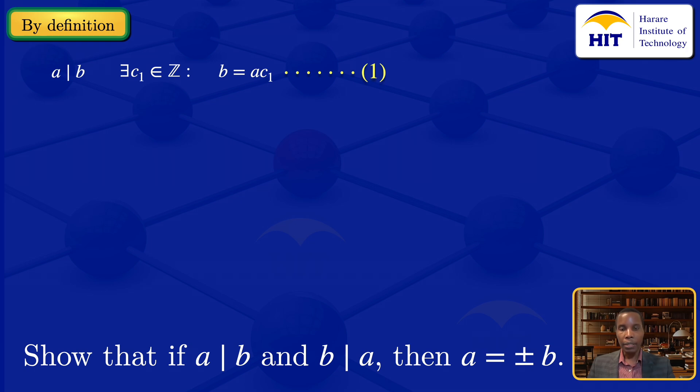Now look at B divides A. By definition, B divides A if there exists an integer C₂ such that A = BC₂. I'll call that equation 2.